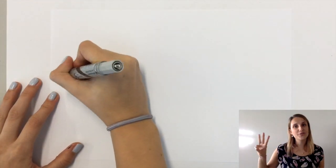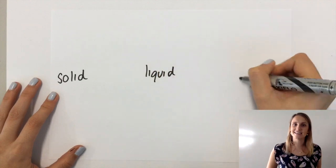Let's start by writing down our three states of matter: solid, liquid, and gas.